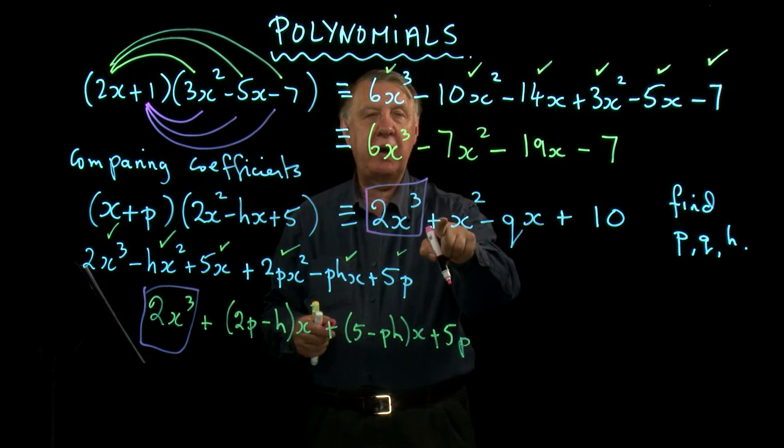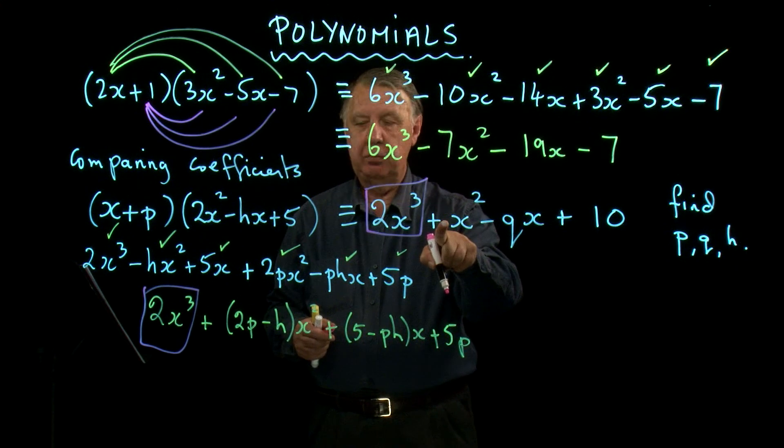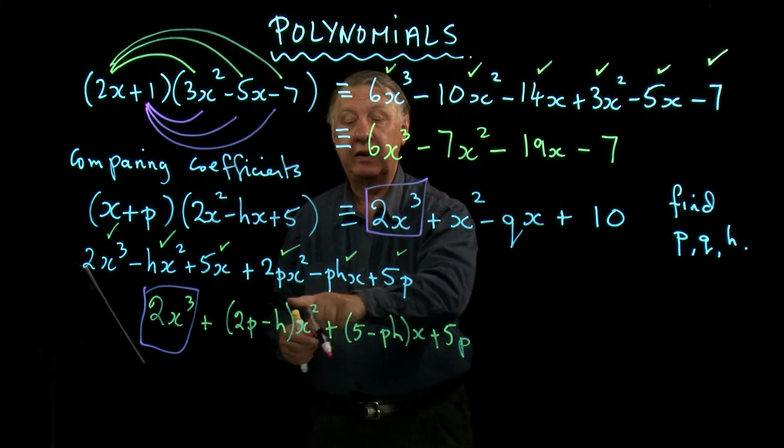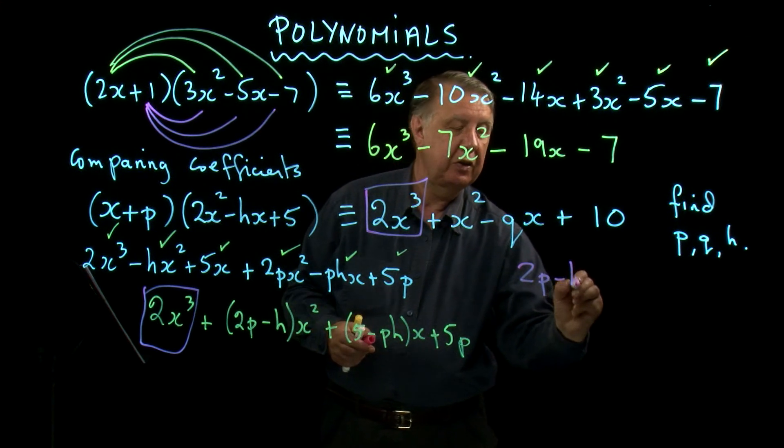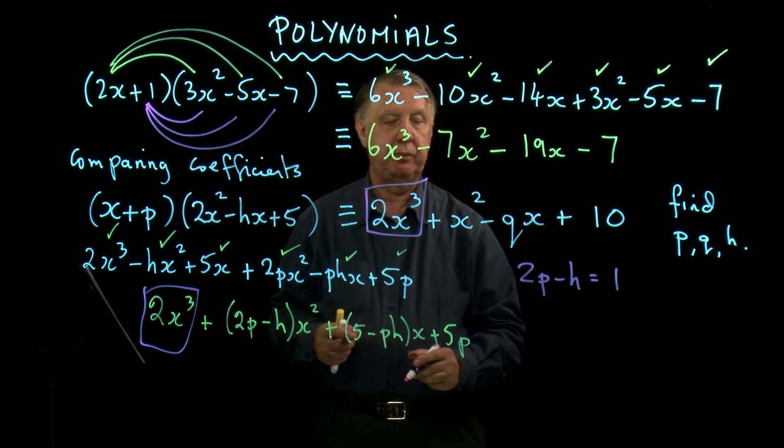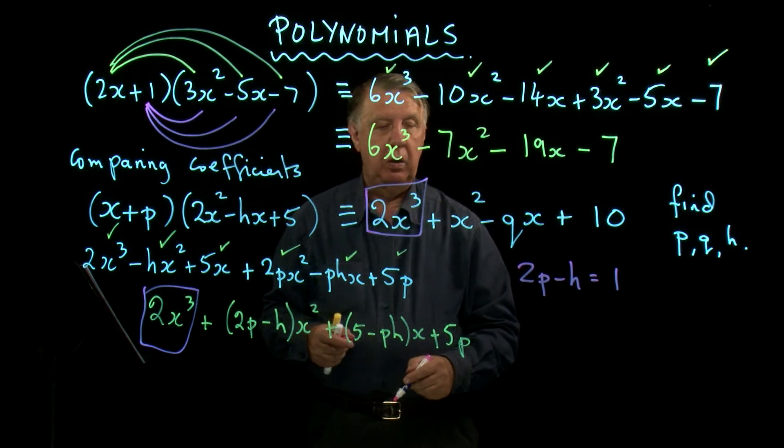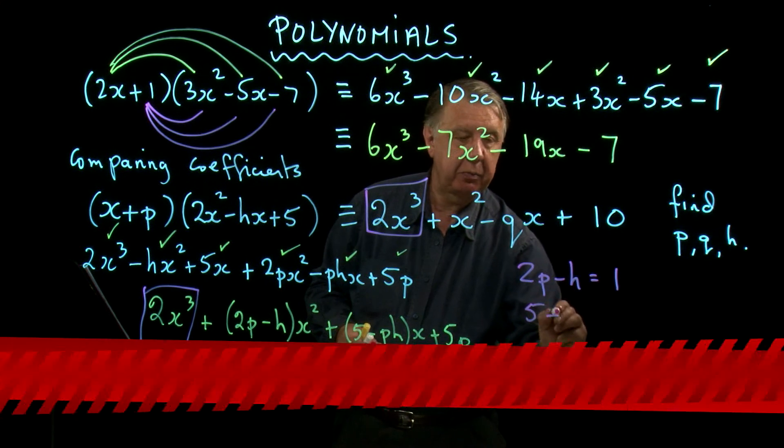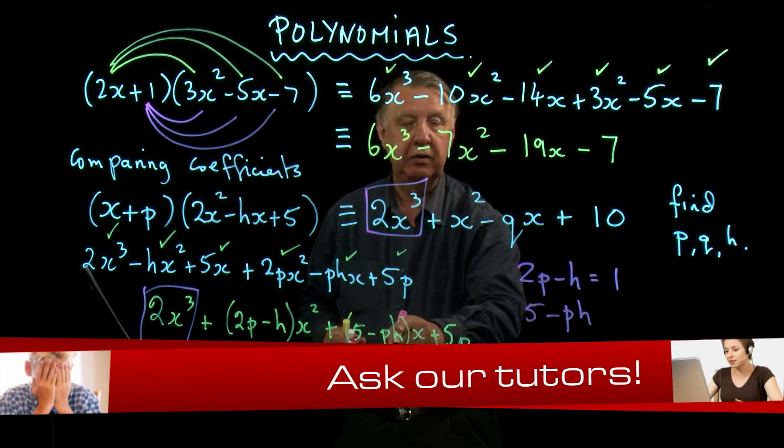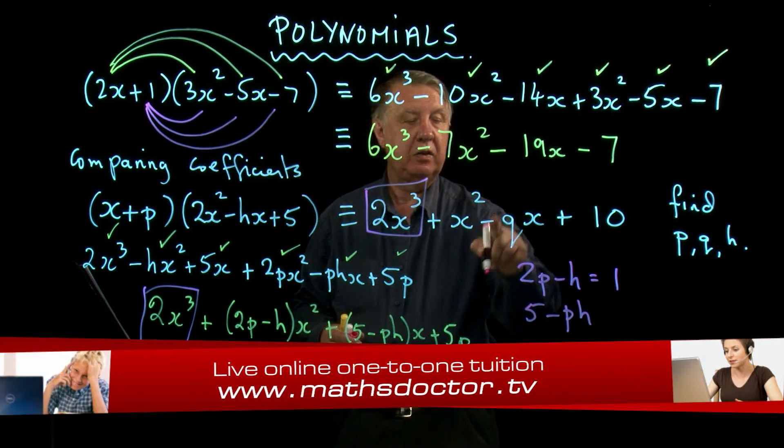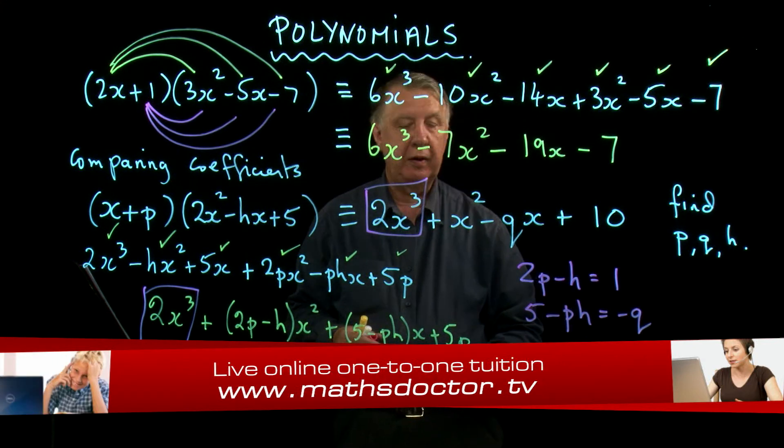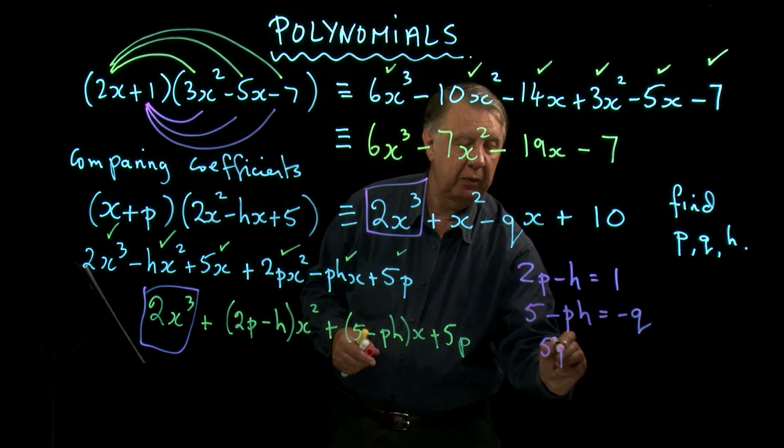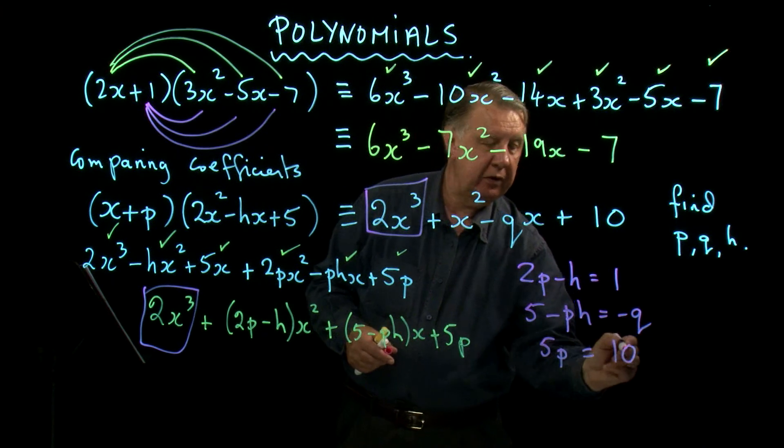Now the next bit, there's 1x² here. But how many x² are there here? There appear to be 2p-h, but I'm saying it's the same. So 2p-h has got to equal 1. Similarly, 5-ph is the number of x's here. How many x's are there here? -q. And finally, the number on the end is 5p. The number on the end is 10.